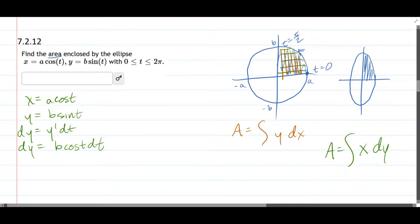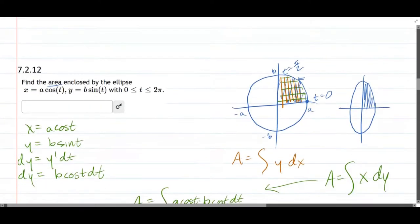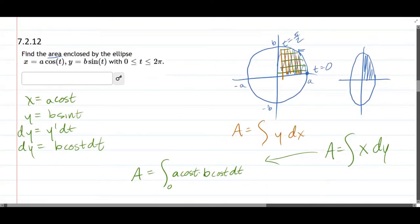All right, we're ready to sub these in. Integral x, which is a cos t times that dy, which is times b cos t dt. And we've already determined our t values go zero to pi over two.